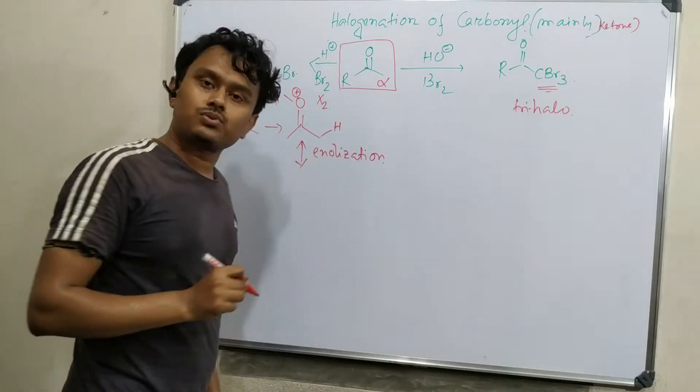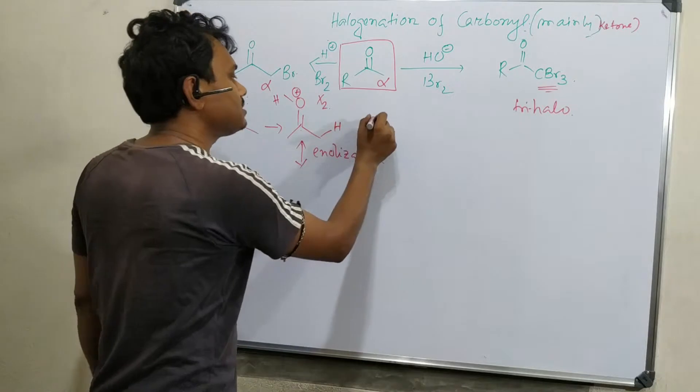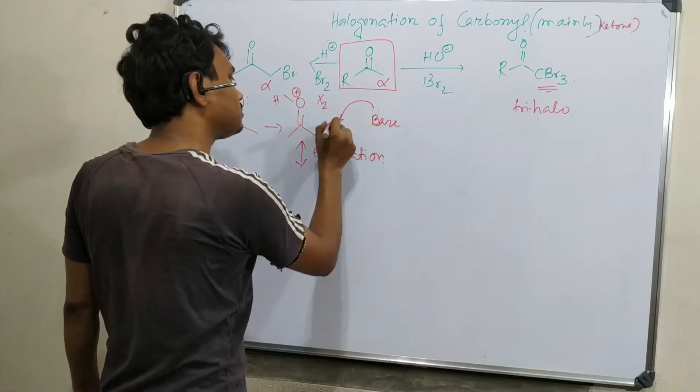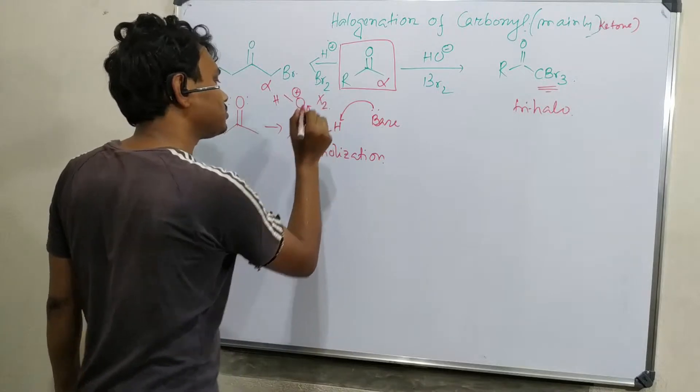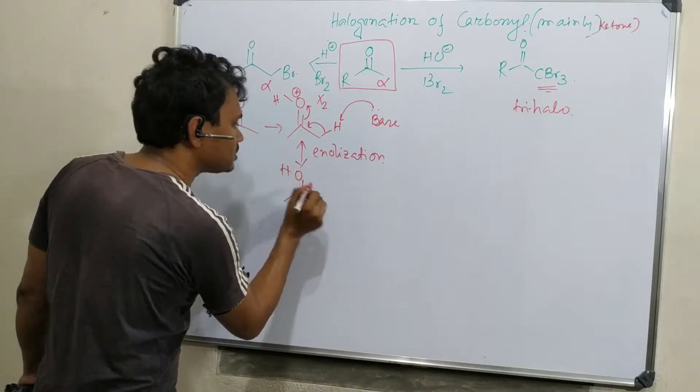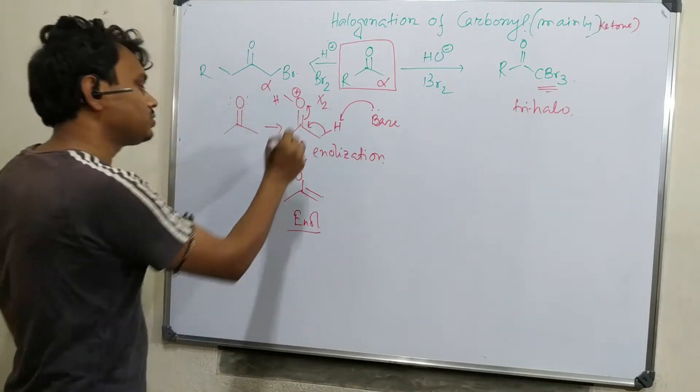Right now it's keto-carbonyl, after that it produces enol. How? This proton is abstracted by some solvent molecule acting as a base. Ultimately it produces OH with this double bond. This is called enol.